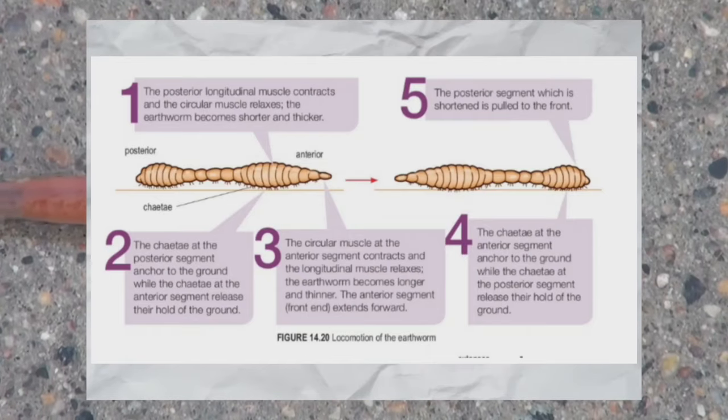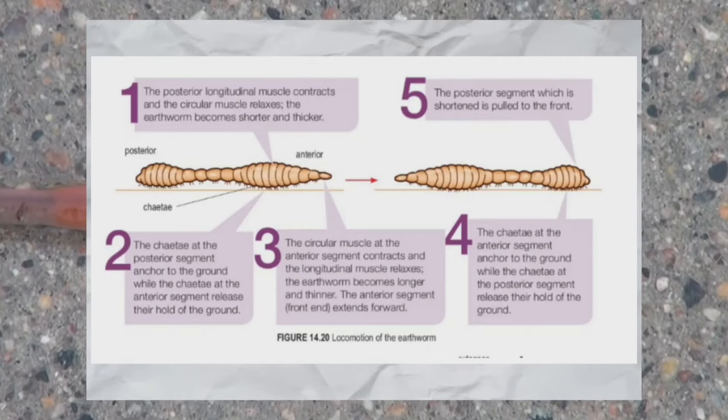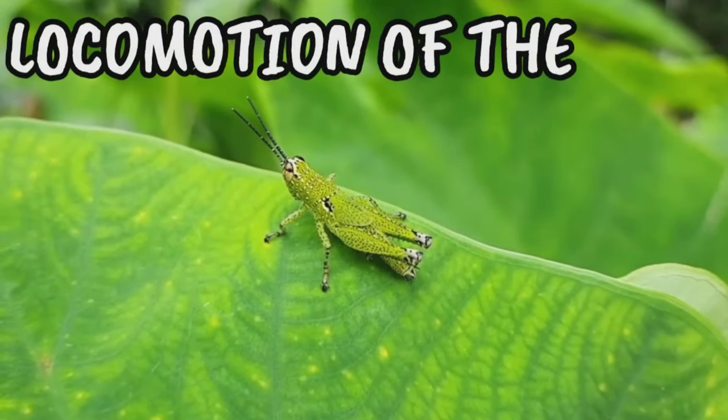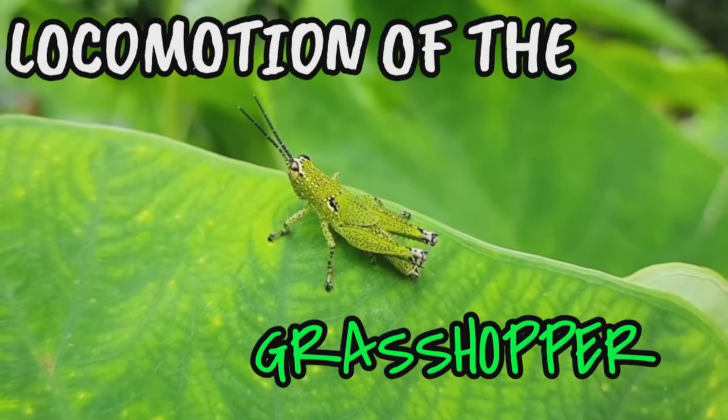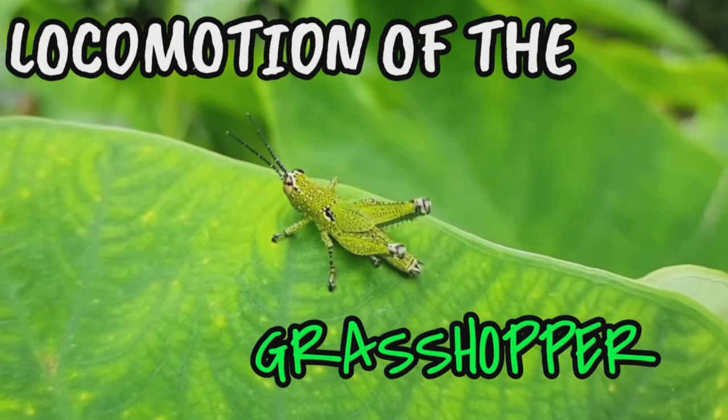The interior segment, which is shortened, is then pulled to the front, completing the forward movement of the earthworm.